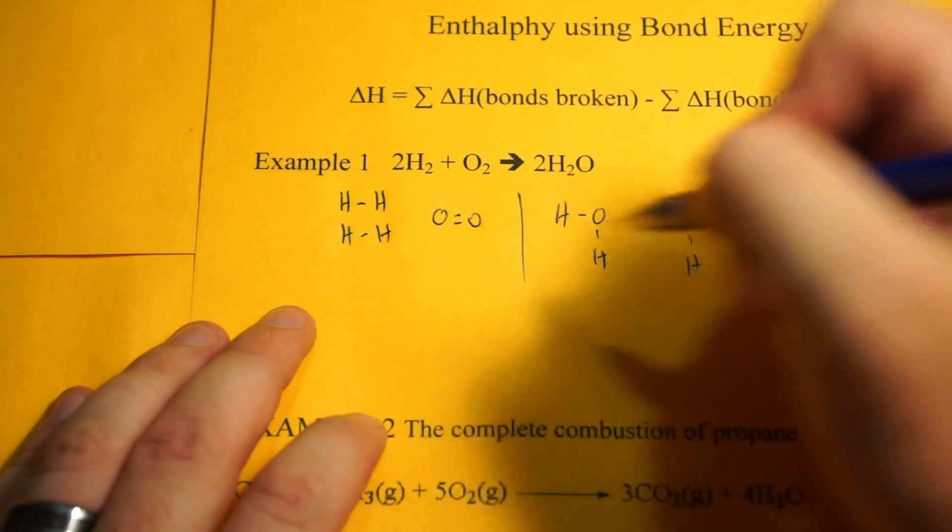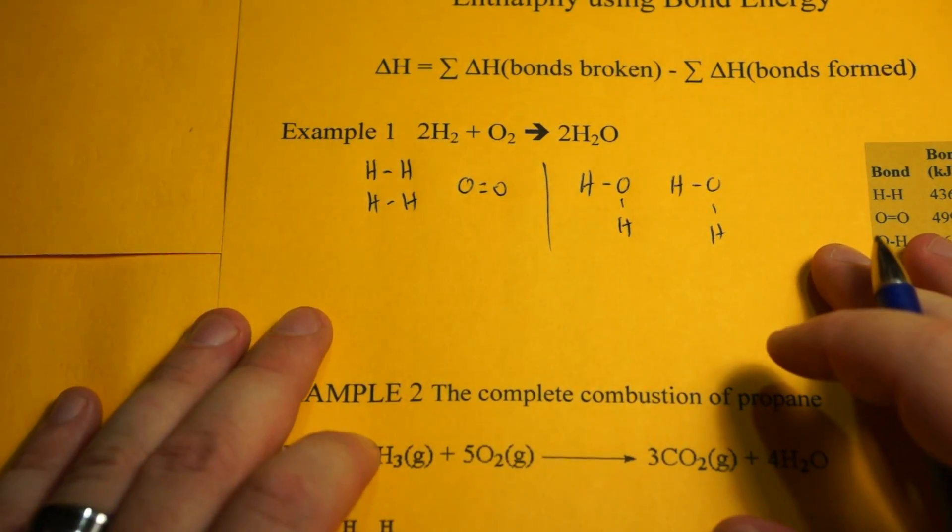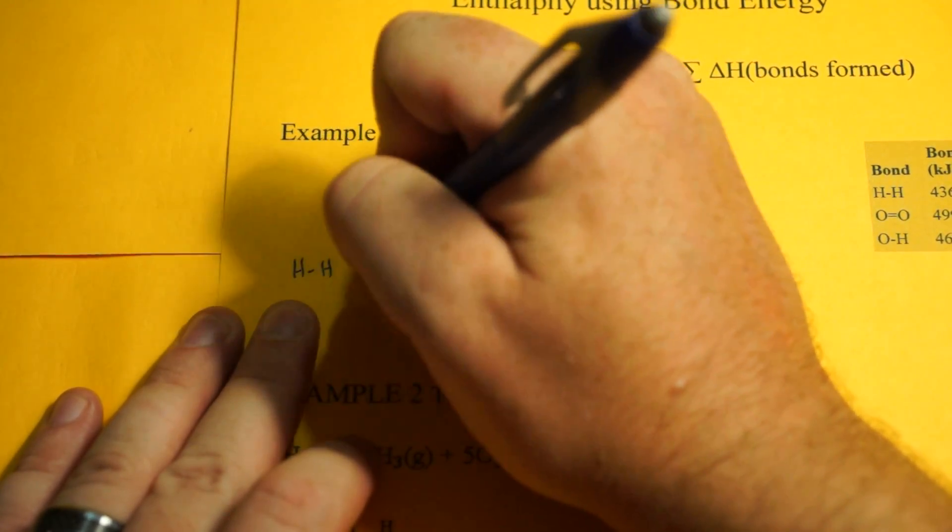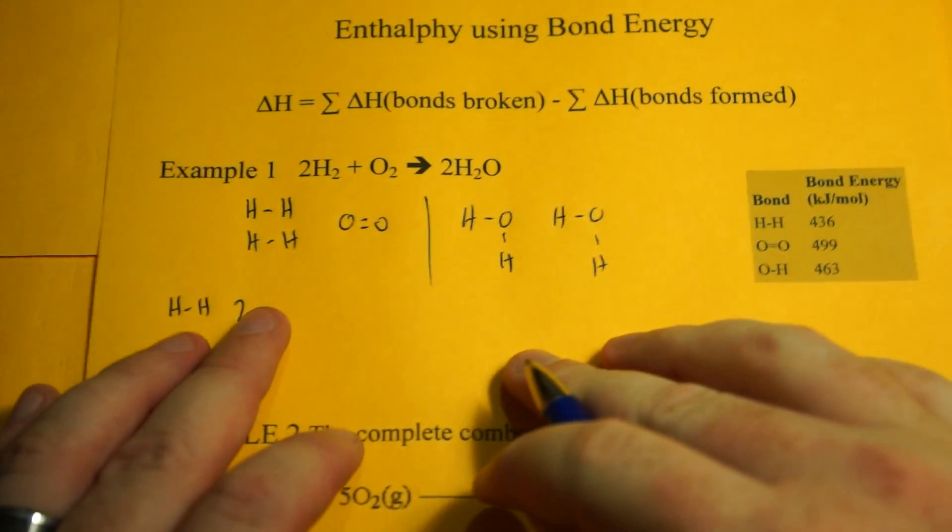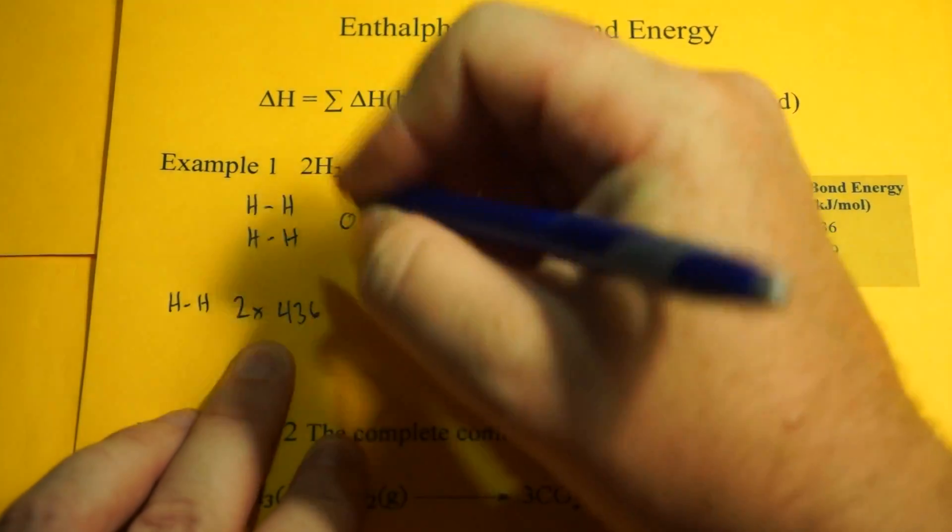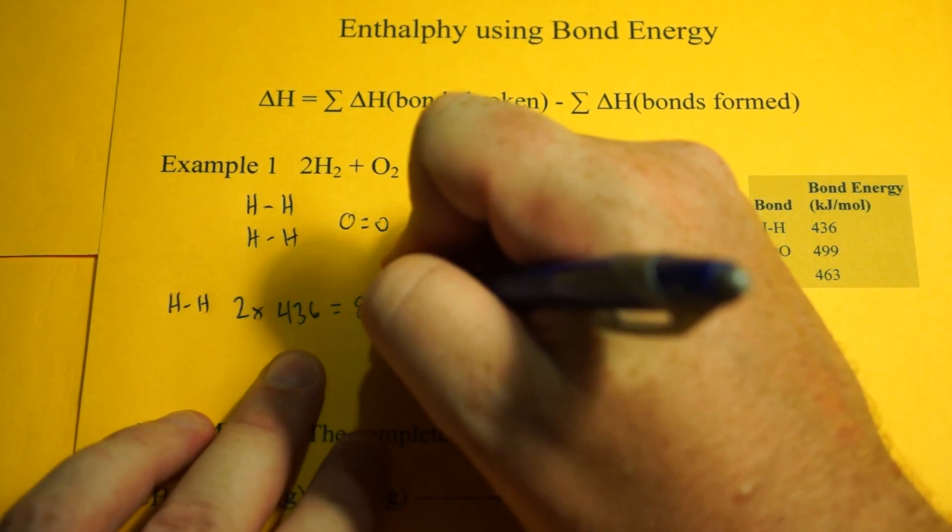There we go. These are broken, these are formed. Now all we have to do is a little bookkeeping. We have two hydrogen-hydrogen bonds, and we're going to look up the energy for that. That's 436, and if we multiply that out, that's 872.